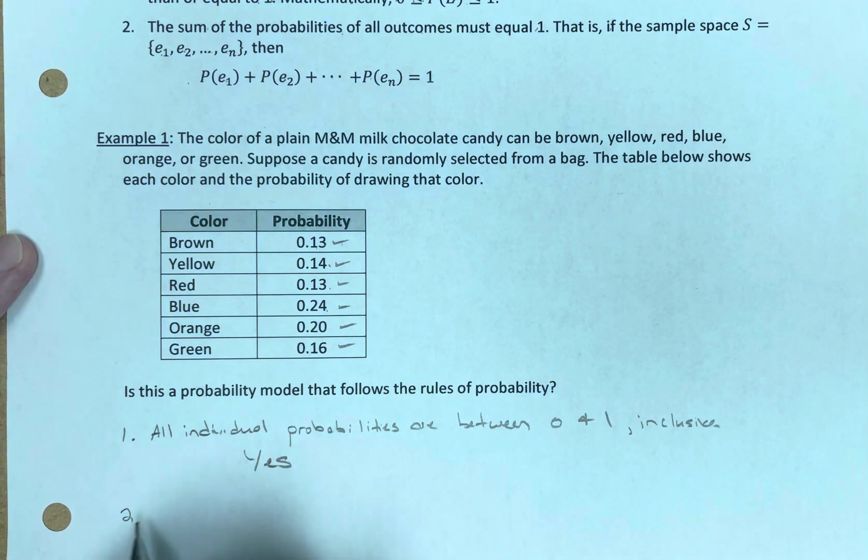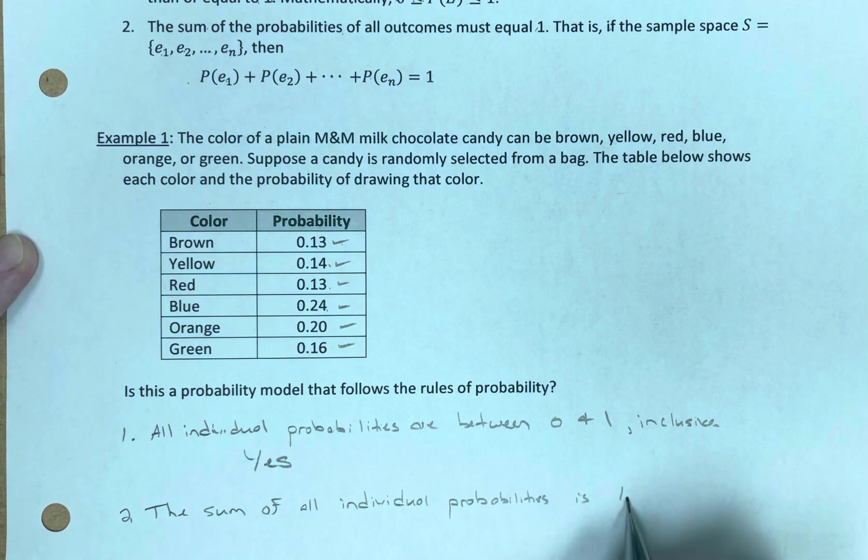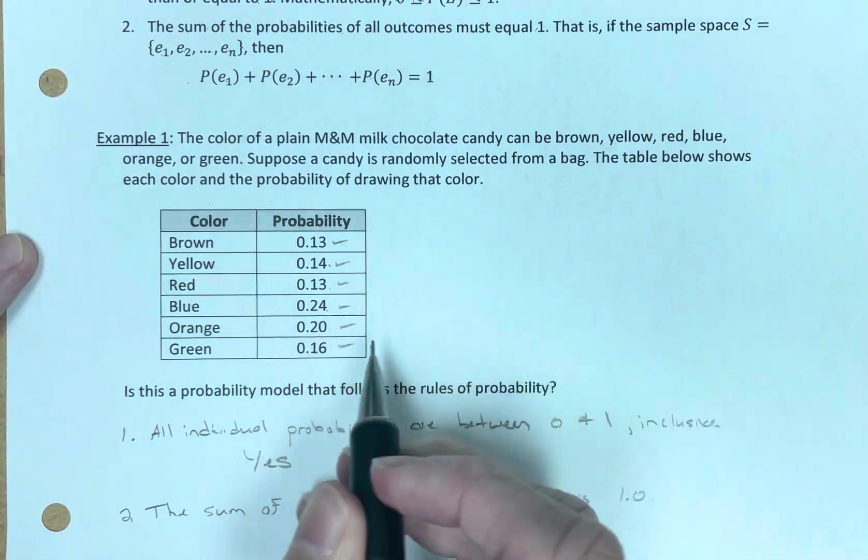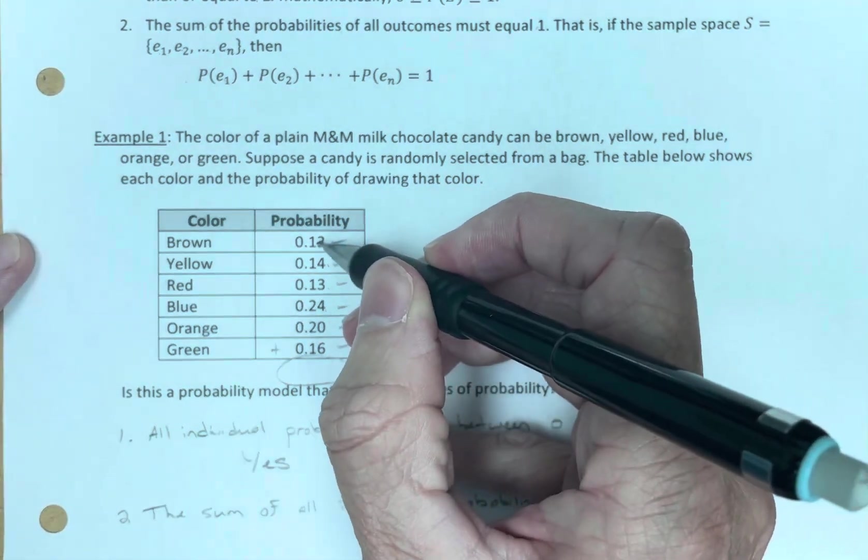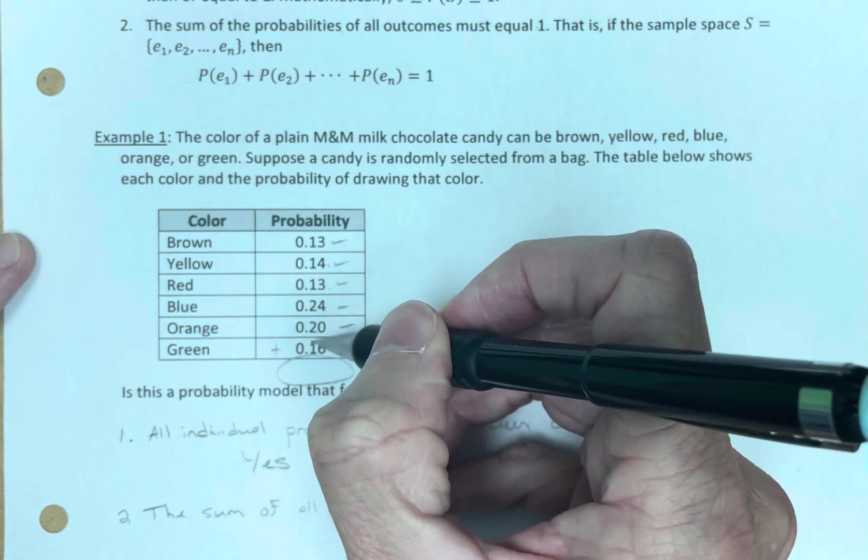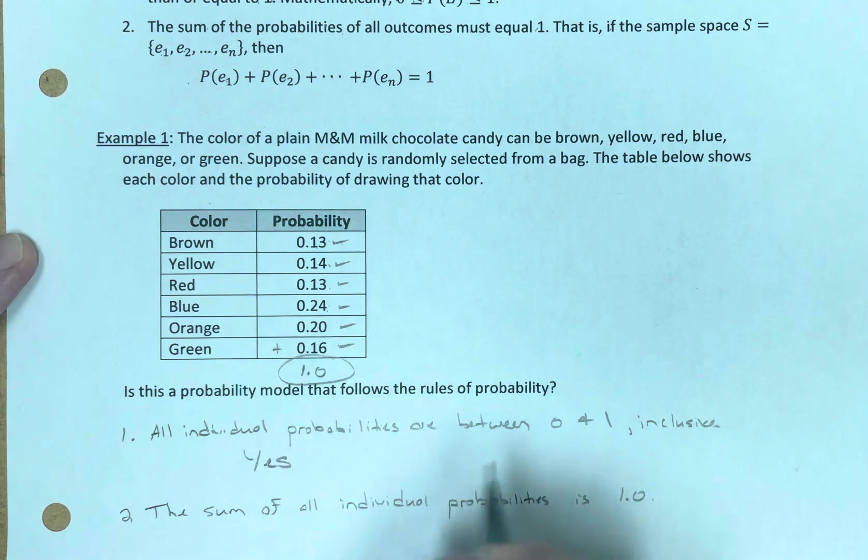So two. The sum of all individual probabilities is 1. I'll put in 1.0. Let's see. So we want to add these up. We want to get a 1 here. And I can add these up. 10, 20, 30, 40, 50, 60, 70, 80. There's 90, 96. Yep, I got 1.0. So yes.